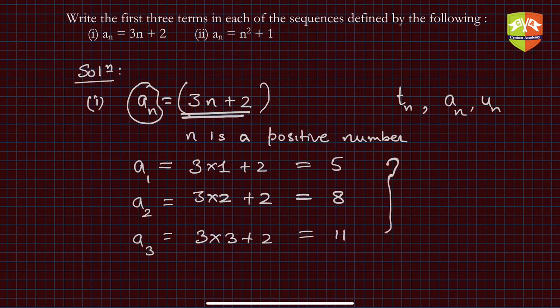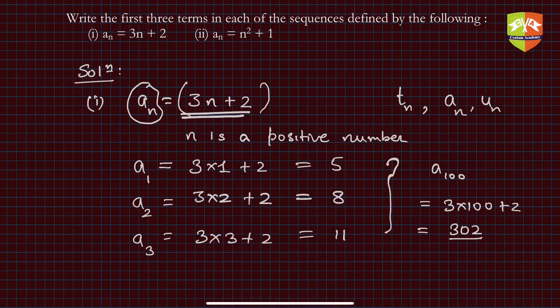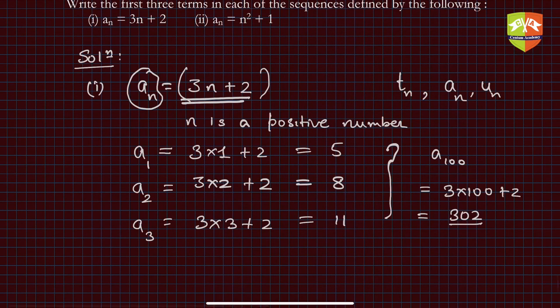If you extend this problem, say they ask you to find a_100, then a_100 is simply 3 × 100 + 2 = 302. Very easy to find any nth term in this. Let's take up the next one. The second one says a_n = n² + 1, which is nothing but